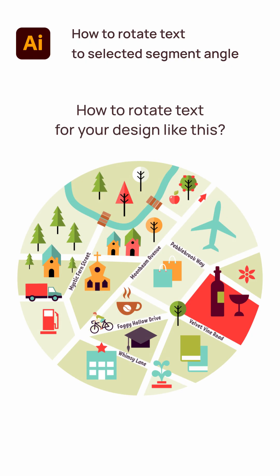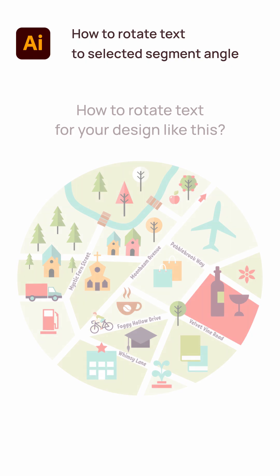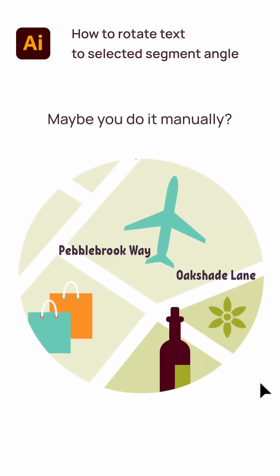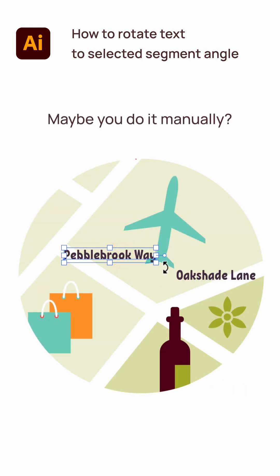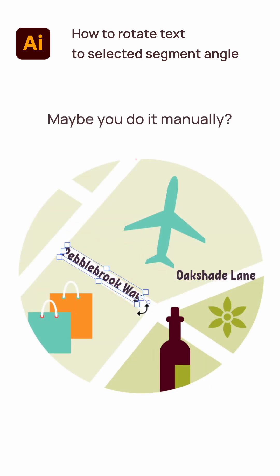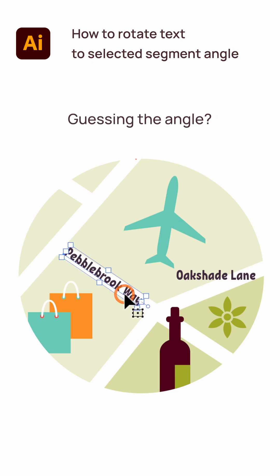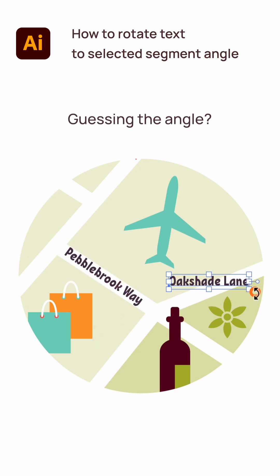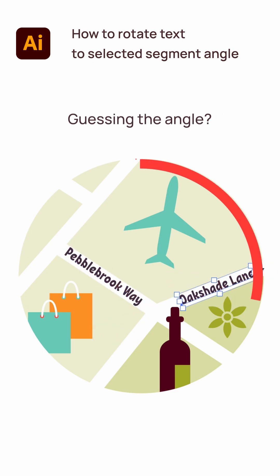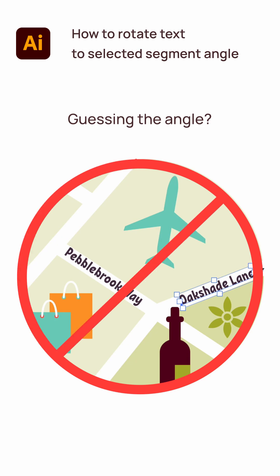Need to rotate text along a custom angle in Illustrator? If you're aligning text to a path, manually rotating it can be time-consuming and imprecise. Wouldn't it be great if an Illustrator JS script could calculate the perfect angle for you?